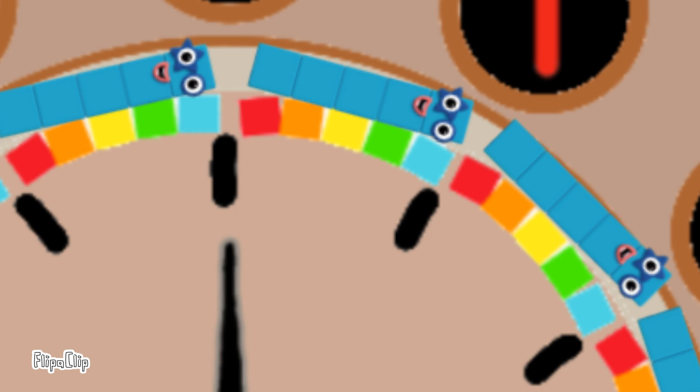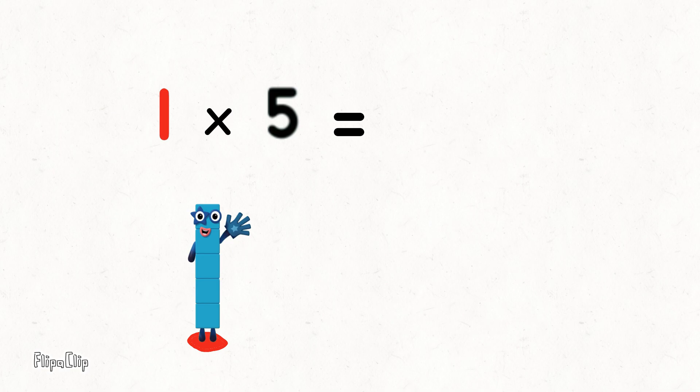One minute, two minutes, three, four, five. One lot of five is five.